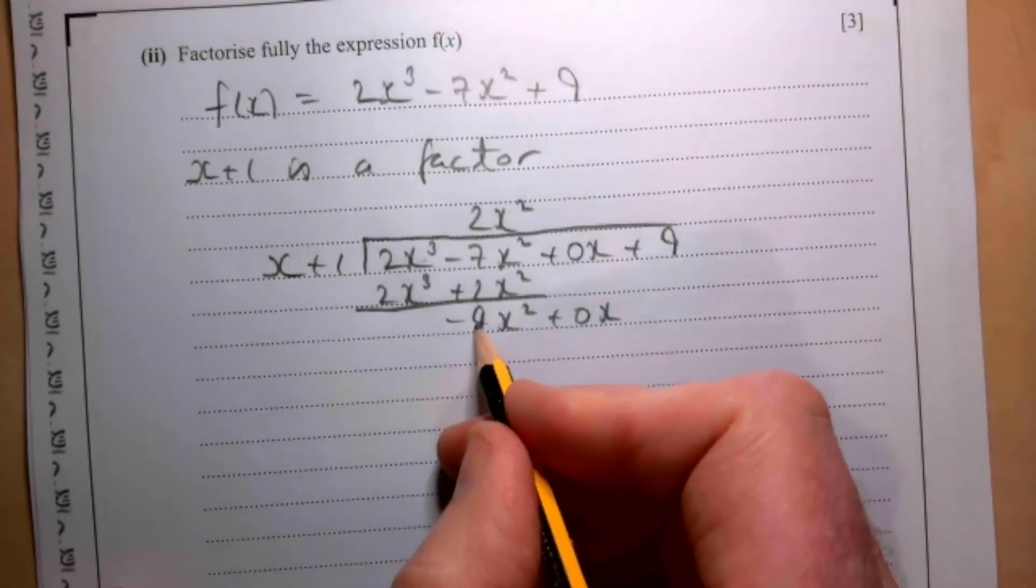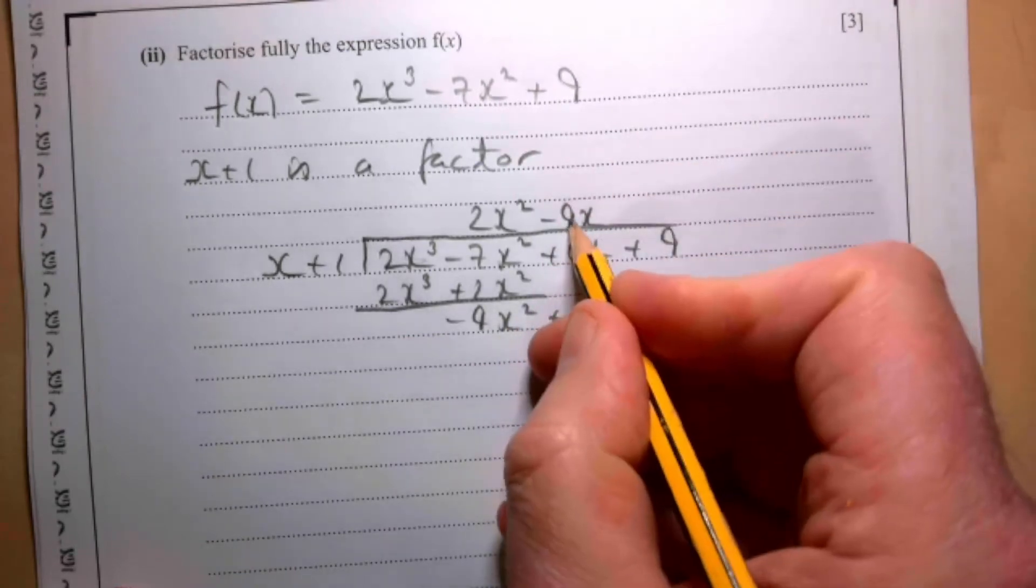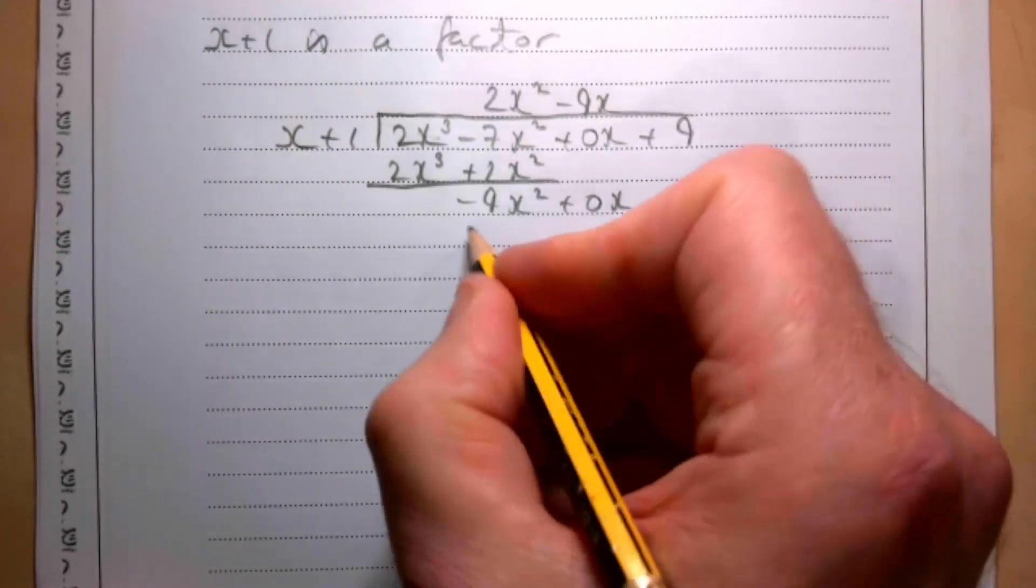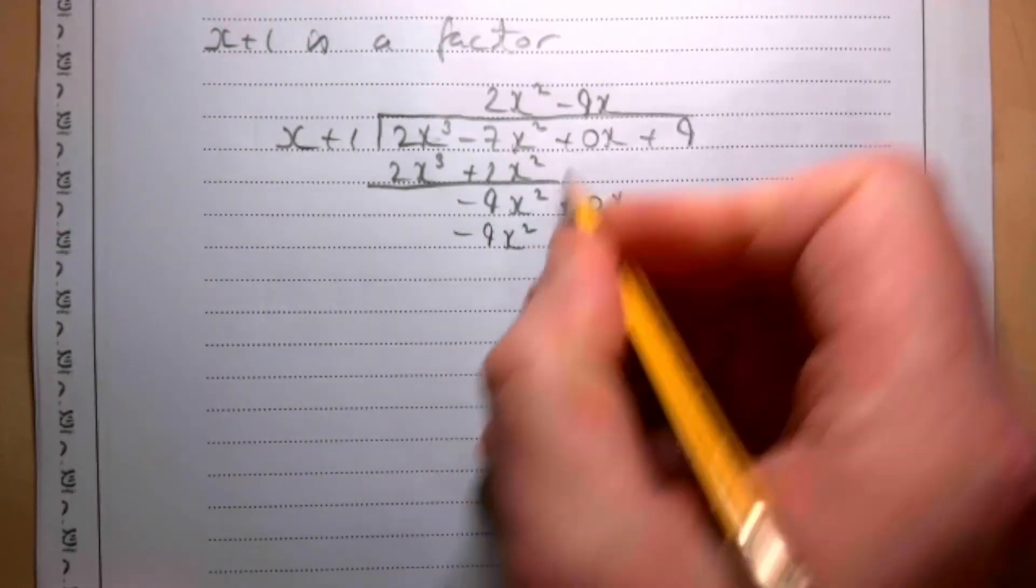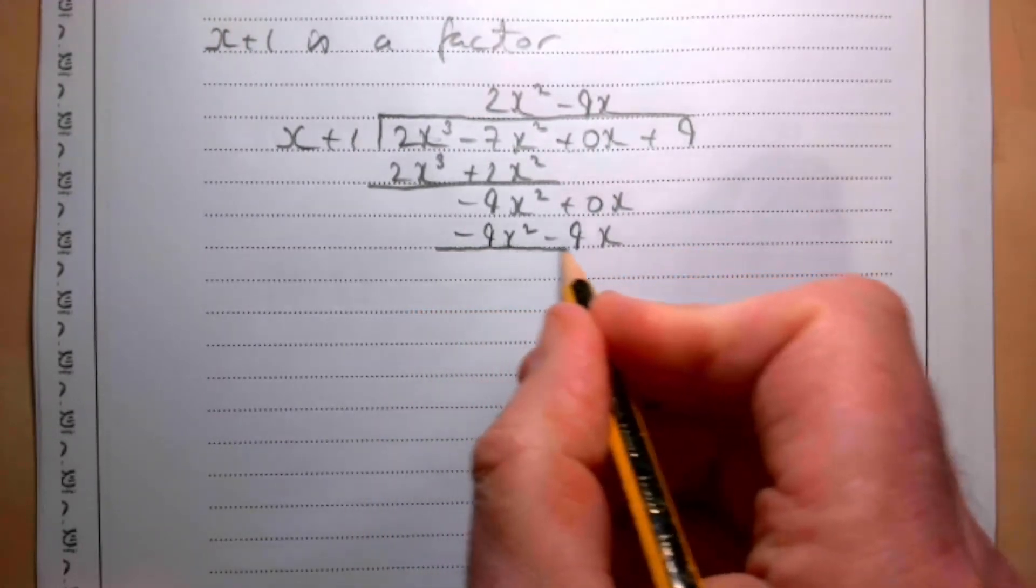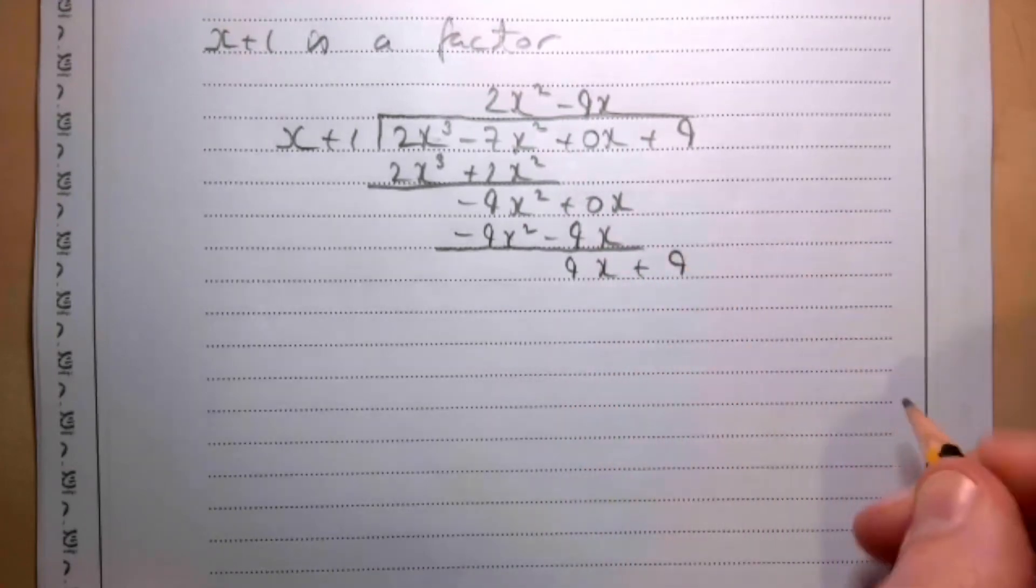x into this gives me -9x. -9x times this gives me -9x² - 9x. Taking away this gives me 9x + 9.